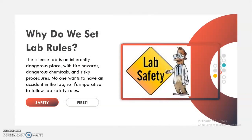First, let's talk about why we set lab rules. The science lab is an inherently dangerous place with fire, hazardous and dangerous chemicals and risky procedures. No one wants to have an accident in the lab, so it is imperative to follow lab safety rules. As a teacher, you are expected to explain or post some rule charts in your laboratory, because student safety is first and it is a means to achieve successful classroom management.